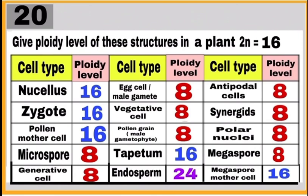Question number 20: Calculate the ploidy level of different structures in a plant where 2n equals 16.